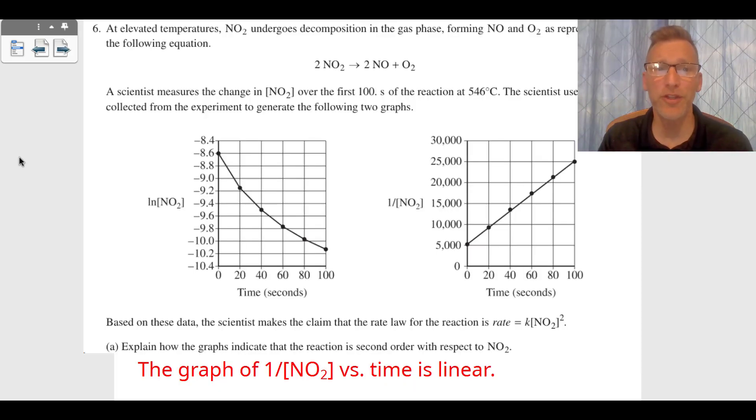Question number six is a kinetics problem. You can see we have a non-linear graph of natural log of NO₂ versus time and a linear graph of 1/[NO₂] versus time. Part A asks, explain how the graphs indicate that it's second order. Since the graph of 1/[NO₂] versus time is linear, we know it's second order. That's going to be one point for question A.